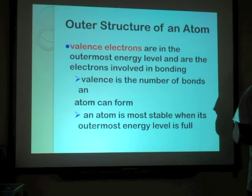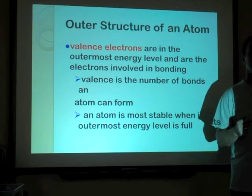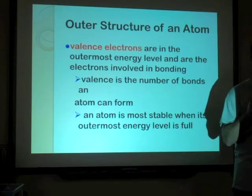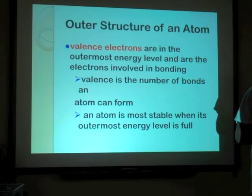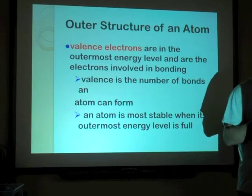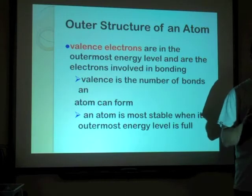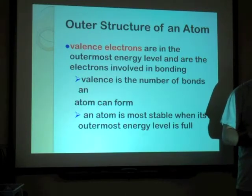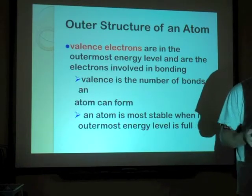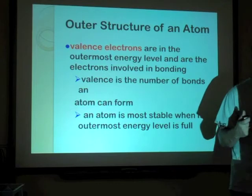Valence is the number of bonds an atom can form. Valence electrons are on the very outside of the atom, and they're the ones that do all the connecting — like the bumps on Legos that connect with the bottom side of another Lego. An atom is most stable when its outer energy level is full. As we look at the periodic table, the more electrons we get in the outer ring, the more stable and less reactive the atom becomes. Sometimes atoms are dangerous because they're unstable and very reactive, but the more electrons they get in the outer ring, the better they're going to be.